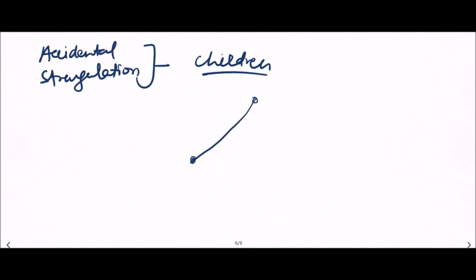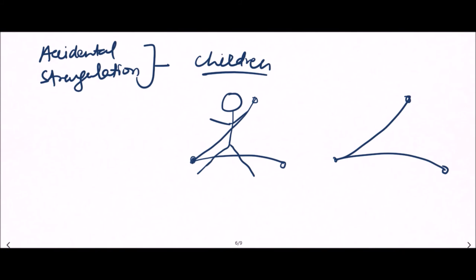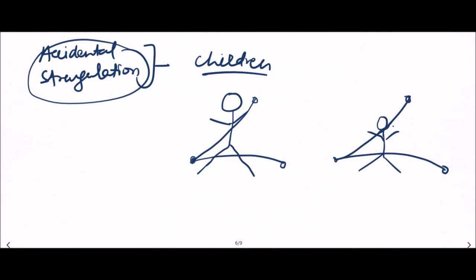What happens is the child is sitting with the shoulder strap and lap belt, and after sudden deceleration, the child slips and the shoulder strap comes across the throat of the child, causing accidental strangulation. These kinds of strangulations are commonly seen in children.